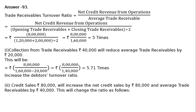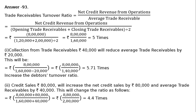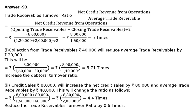Part B: Credit revenue from operations or credit sales Rs 80,000 will increase the net credit sales by Rs 80,000 and average trade receivables by Rs 40,000. The new ratio becomes Rs 8 lakhs plus Rs 80,000, divided by Rs 1 lakh 60,000 plus Rs 40,000, that is Rs 8 lakhs 80,000 divided by Rs 2 lakhs, which equals 4.4 times. The original ratio was 5 times, so this will reduce the trade receivables turnover ratio.